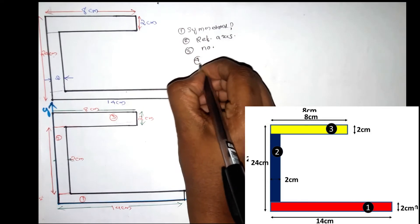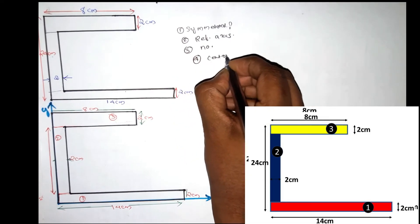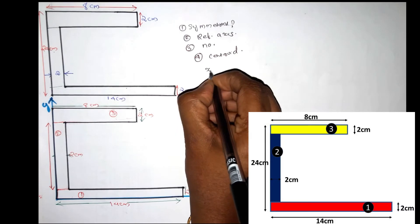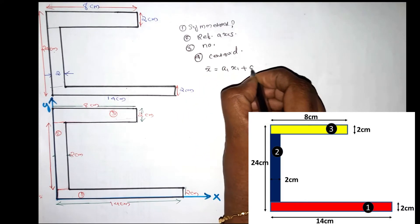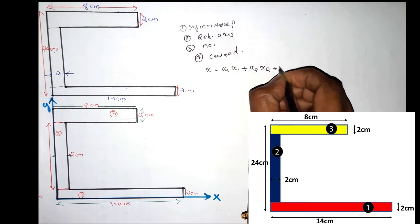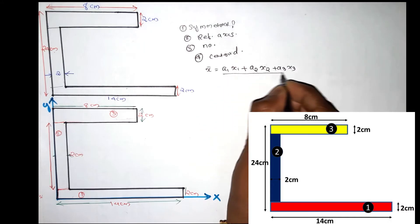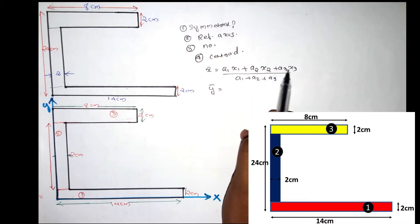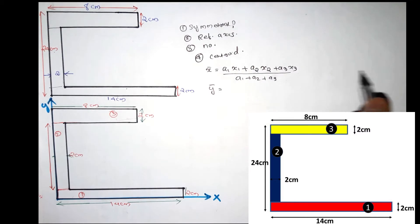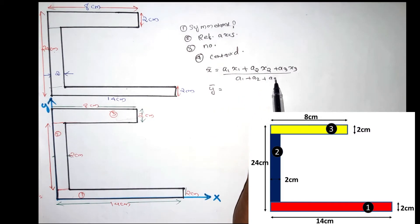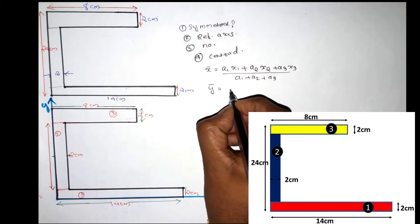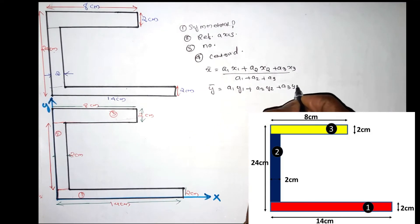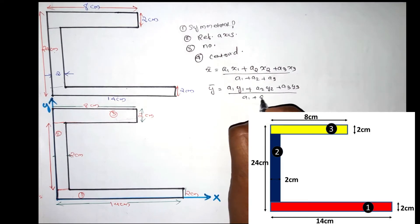The fourth step is to find the centroid. This involves finding x̄ and ȳ. x̄ is equal to (a1·x1 + a2·x2 + a3·x3) divided by (a1 + a2 + a3). ȳ is equal to (a1·y1 + a2·y2 + a3·y3) divided by (a1 + a2 + a3).